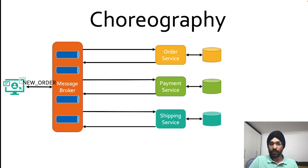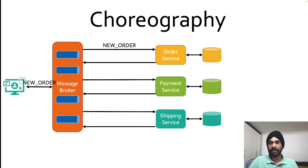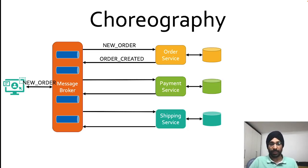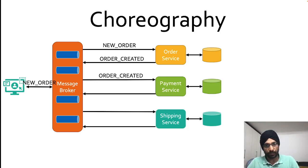As the 'new order' event has been received, the order service — which has subscribed to that particular event — will consume it. Once the order service has completed its workflow, it will reply back with another event called 'order created', which gets published to another topic. In this example, the payment service is interested in consuming this event to drive its workflow.